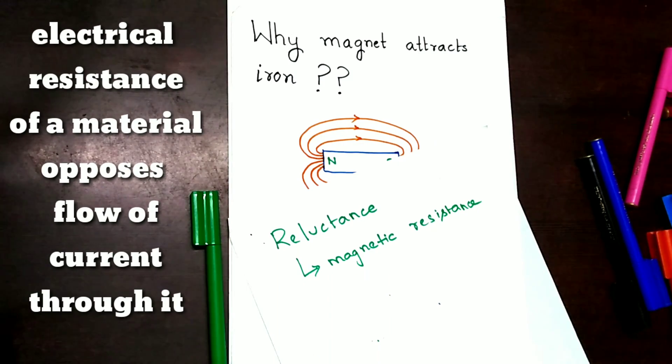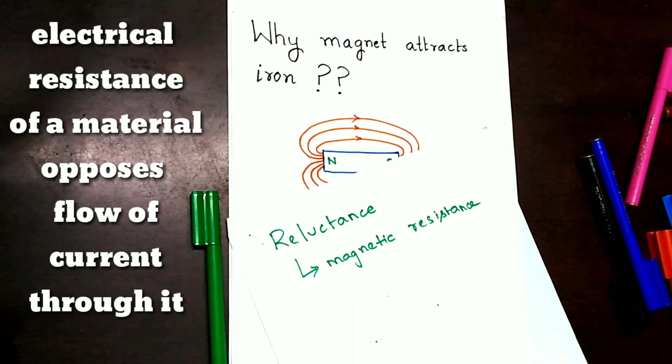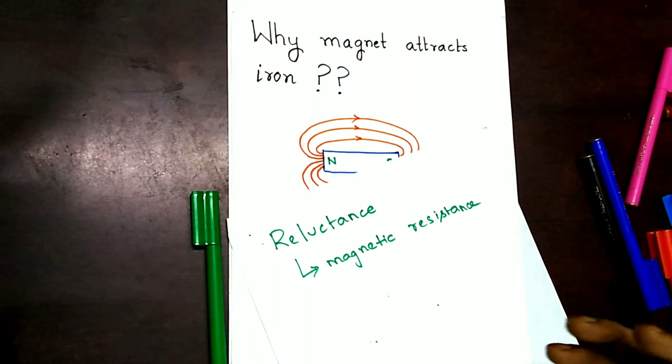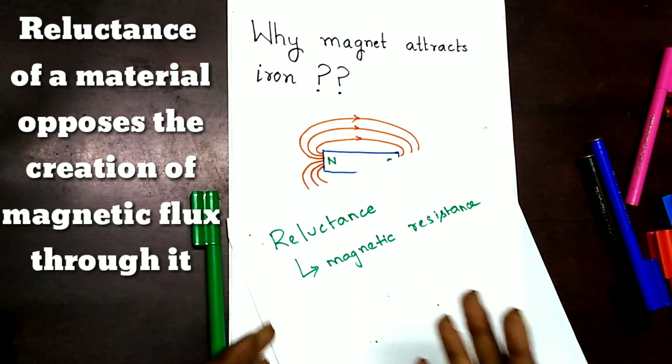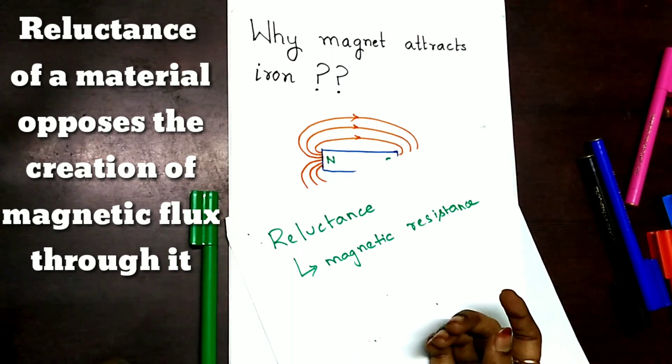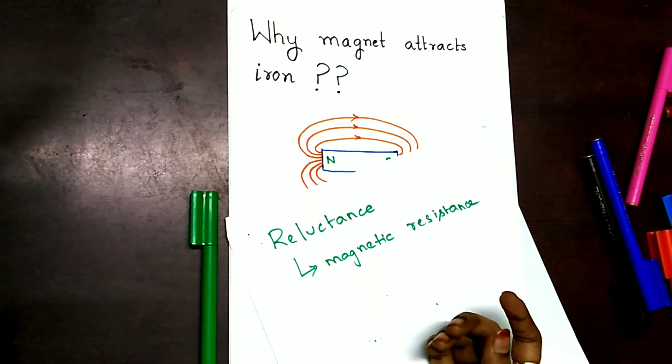Just how electrical resistance opposes the flow of current through an electrical conductor, reluctance is a property of a magnetic material which opposes the magnetic flux through that material.